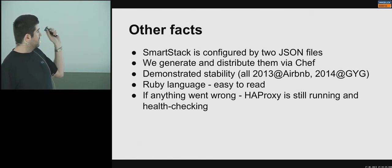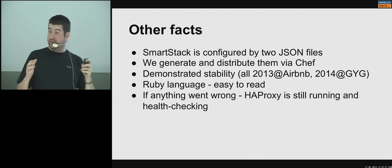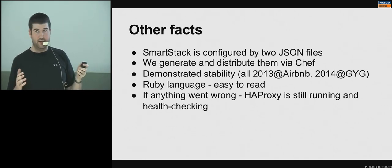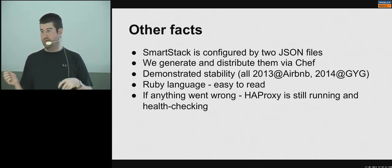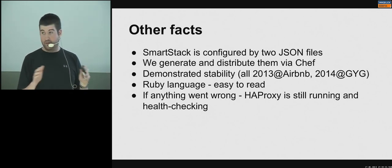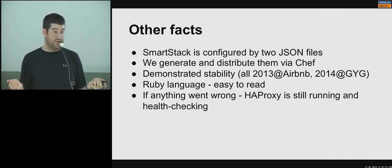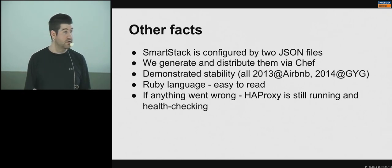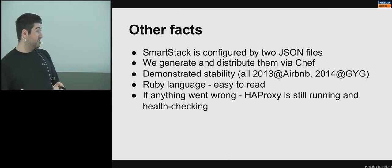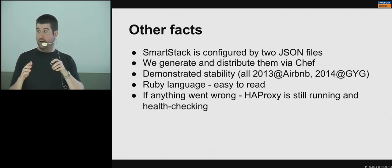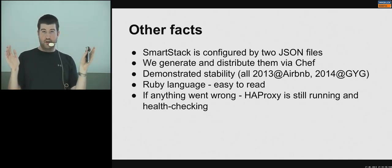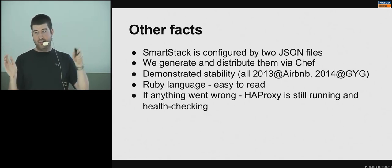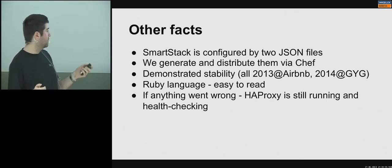It's written in Ruby, which makes it really easy to work with. If anything goes wrong, it's still just HA Proxy underneath, which has been very reliable for the last 10 years — I don't think we've ever seen a single crash. It also does its own health checks, so in case of a split-brain network it won't try to connect to things it can't reach.